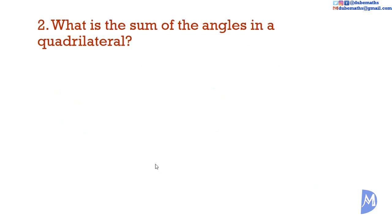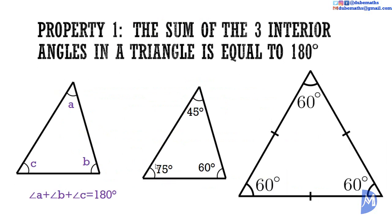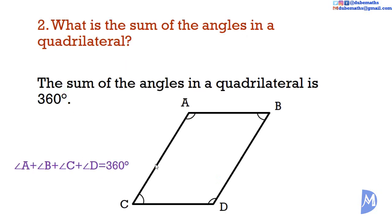Question 2. What is the sum of the angles in a quadrilateral? We know that the angles in a triangle add to 180 degrees. Is there a rule about quadrilaterals? Yes. The sum of the angles in a quadrilateral is equal to 360 degrees.